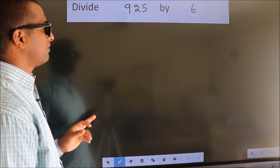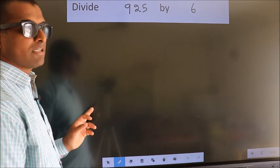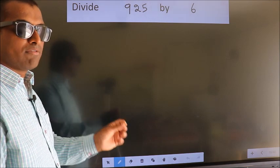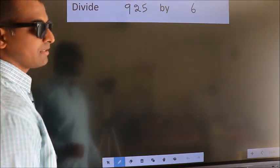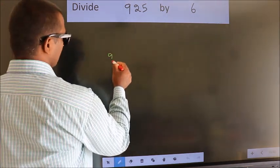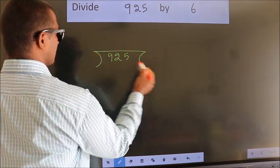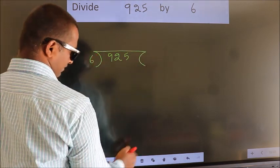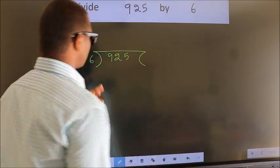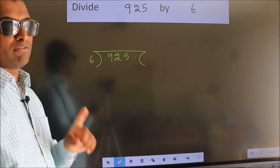Divide 9.25 by 6. To do this division, we should frame it in this way: 9.25 here, 6 here. This is your step 1.